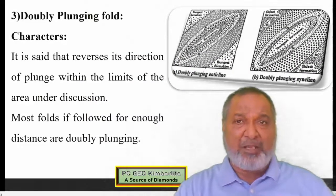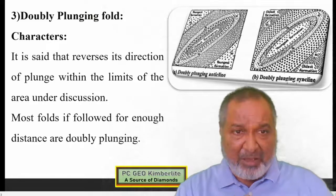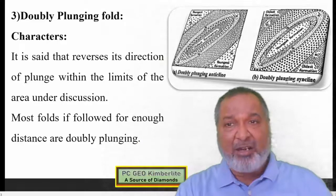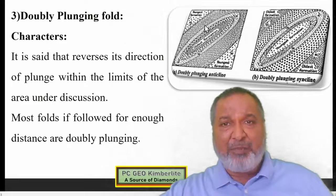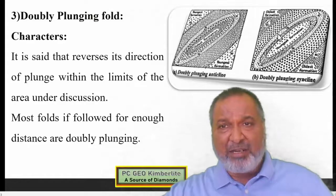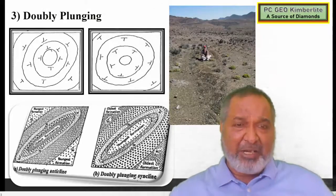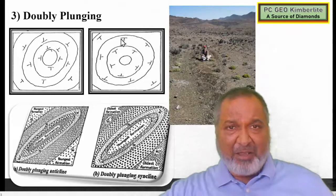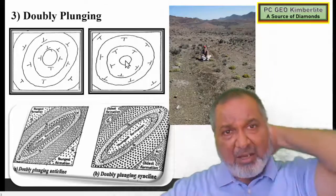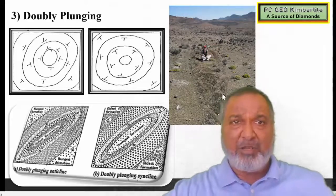Now, doubly plunging. There are two plunge folds. It is said that a fold reverses its direction of plunge within the limits of the area under discussion. Most folds if followed for enough distance are doubly plunging. How do you differentiate? In the anticline, limbs are dipping from the center to the periphery. But in the syncline, the limbs are dipping from the periphery towards the inside. Here we have the doubly plunging anticline diagram and doubly plunging syncline, along with a photograph showing a doubly plunging fold.